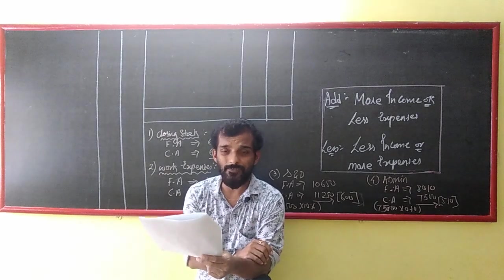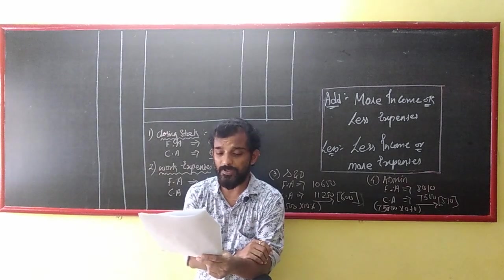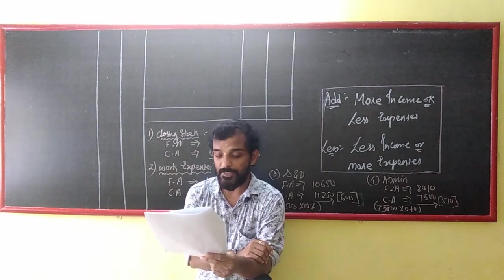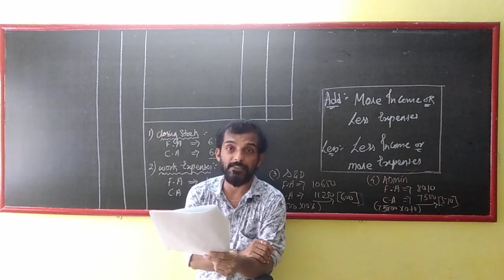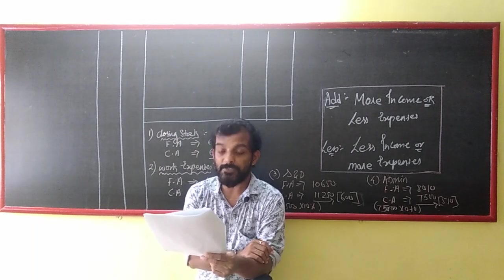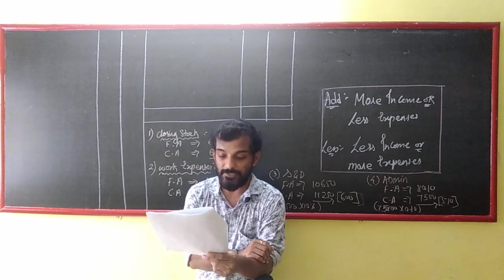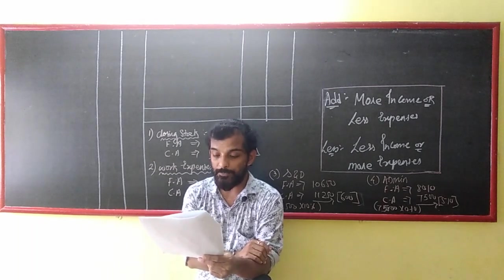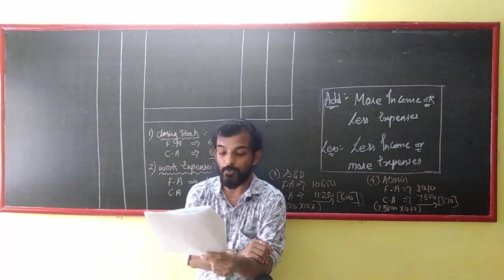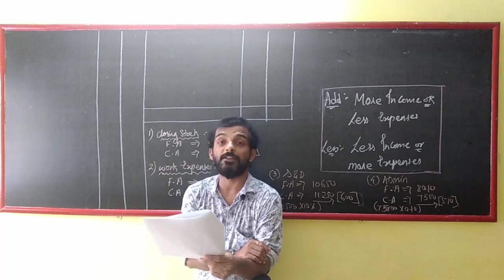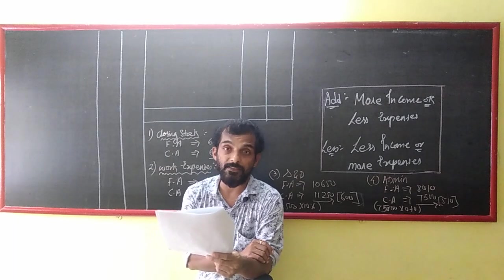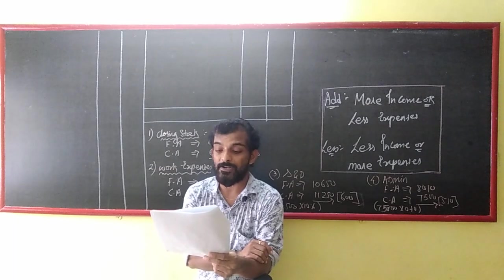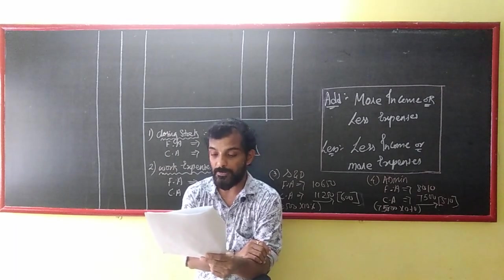Wages: 15,750. Works expenses: 18,195. Selling expenses: 10,650. Admin expenses: 8,010. Depreciation: 1,650. Net profit: 13,450. By sales — 75,000 units at the rate of 1.50 each — 1,12,500.